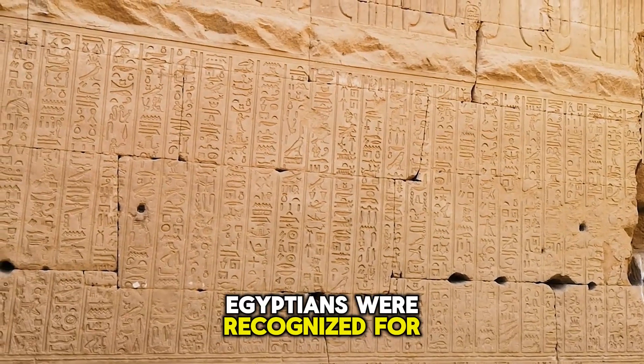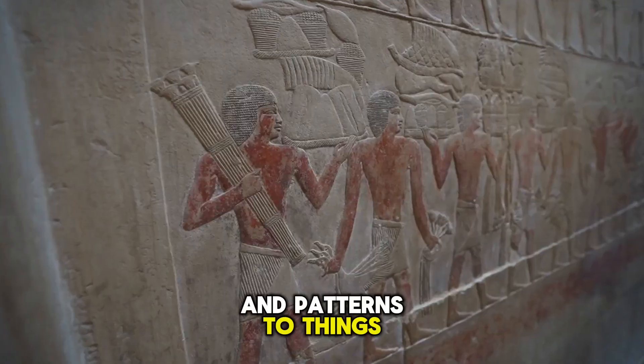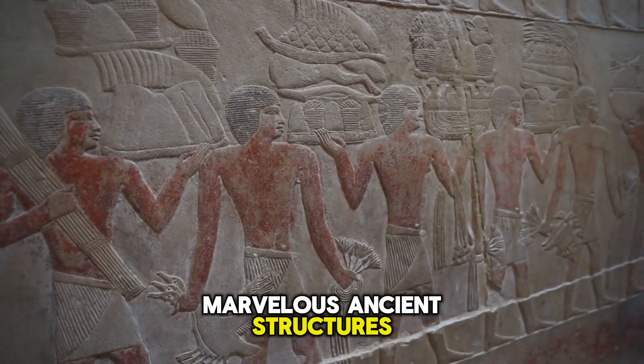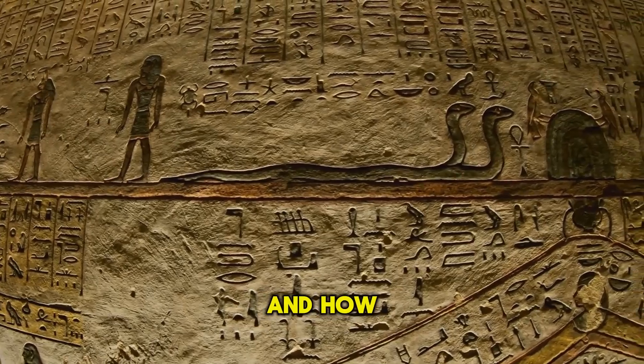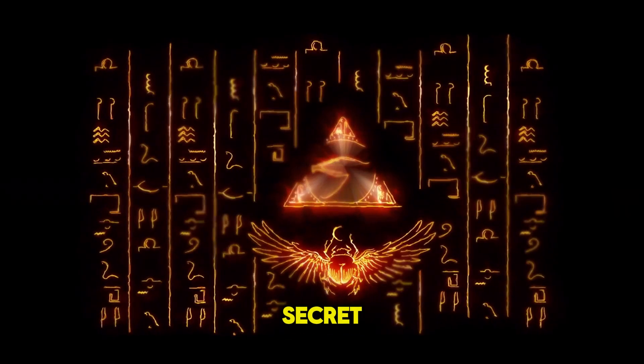Egyptians were recognized for their intelligence and their capacity to put structures and patterns to things. Hence, their hieroglyphs, their pyramids, and other marvelous ancient structures. We'll be looking at the Egyptian knowledge of vibration and how extraordinary it was. We'll also look at why they kept the secret hidden from people.